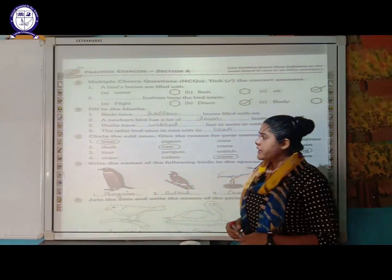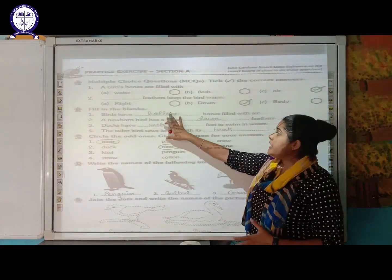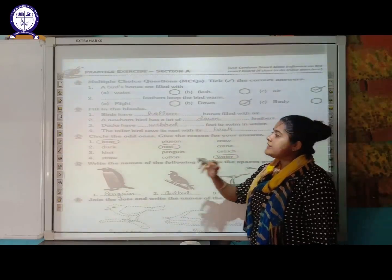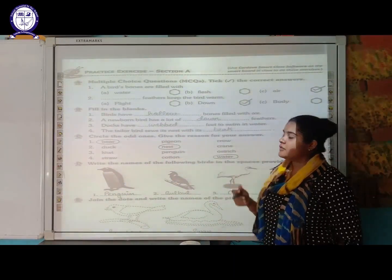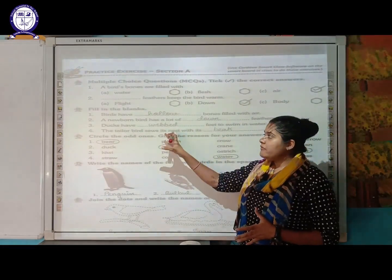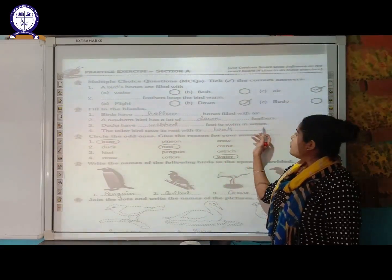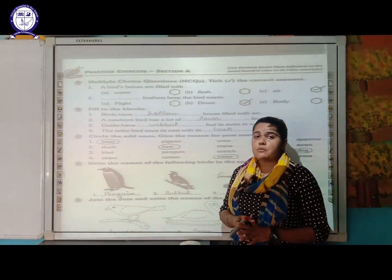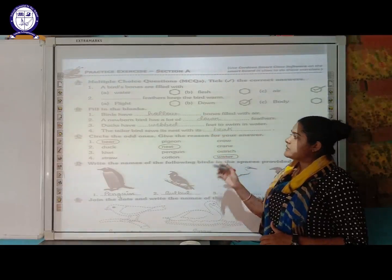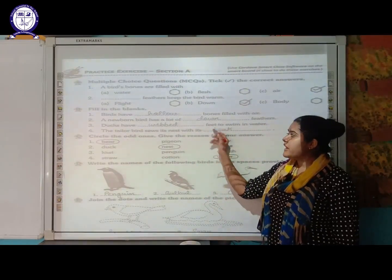Fill in the blanks: Birds have hollow bones filled with air. A newborn bird has a lot of down feathers. Ducks have webbed feet to swim in water. A tailor bird sews its nest with its beak.